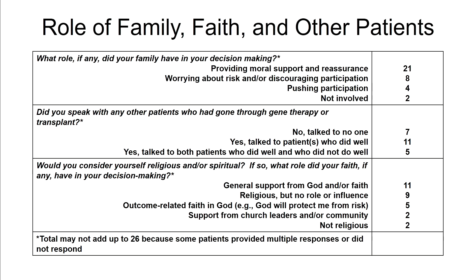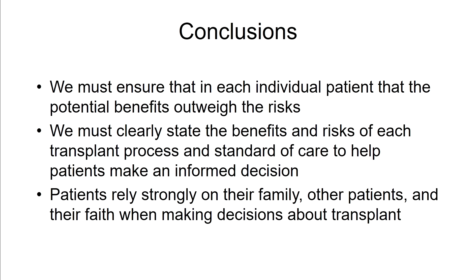Regarding the role of family, faith, and other patients: most reported that family provided moral support and reassurance. When asked if they had spoken with other patients, seven said no; eleven had talked to patients who did well; and five had talked to both patients who did well and who did not. Regarding religion and spirituality: eleven said they had general support from God or their faith; nine said they were religious but faith had no role in their decision; and two said they were not religious. In summary, we must ensure that in each individual patient the potential benefits outweigh the risks of transplant. We must clearly state the benefits and risks of each transplant option and standard of care to help patients make an informed decision. Patients rely strongly on their family, other patients, and their faith when making decisions about transplant.